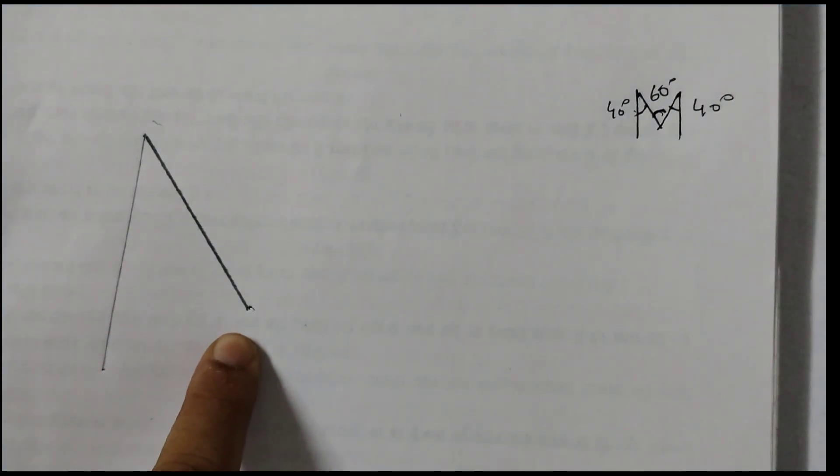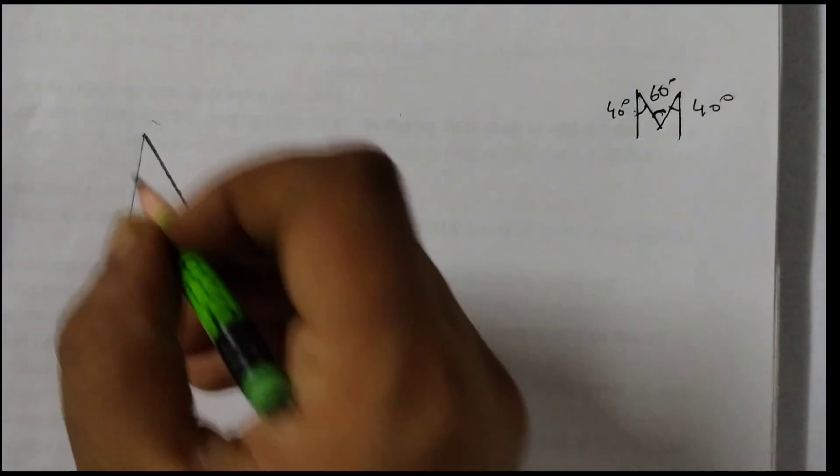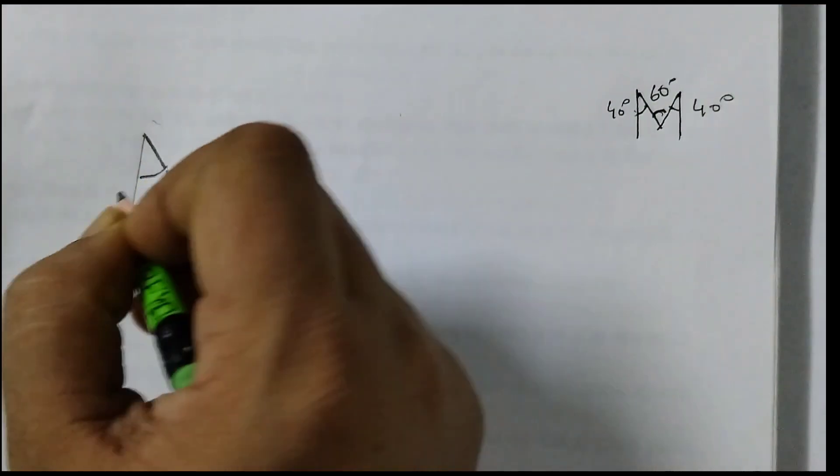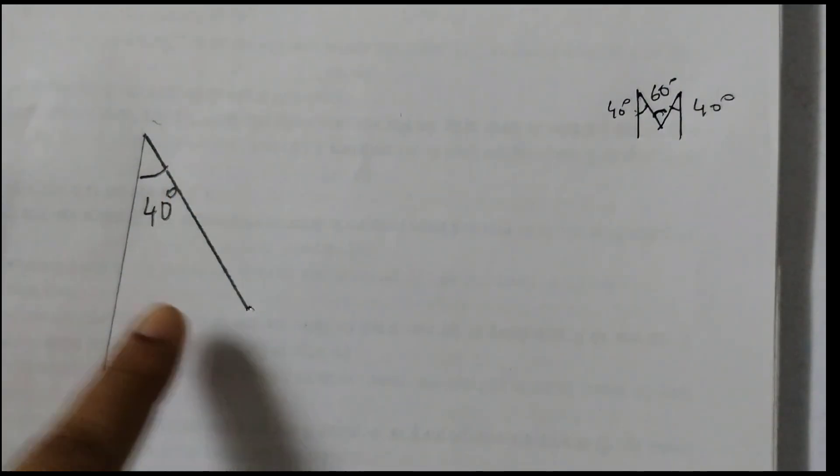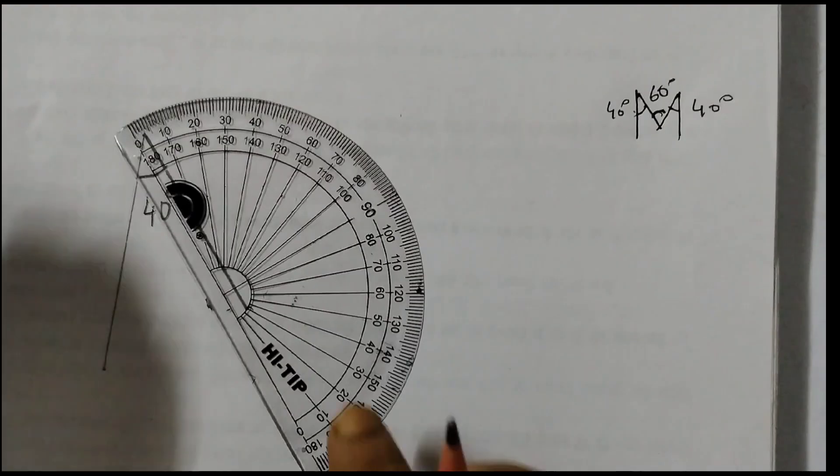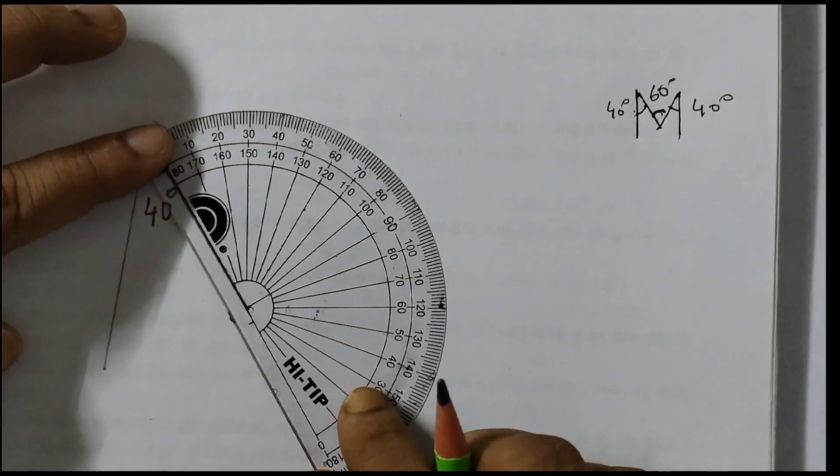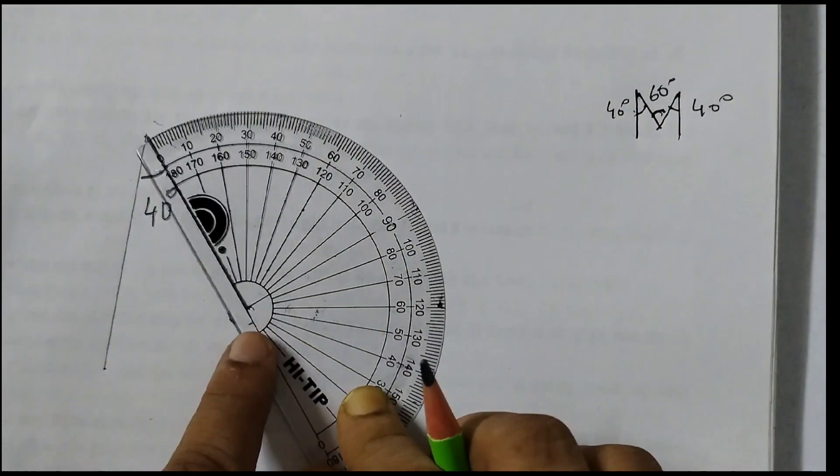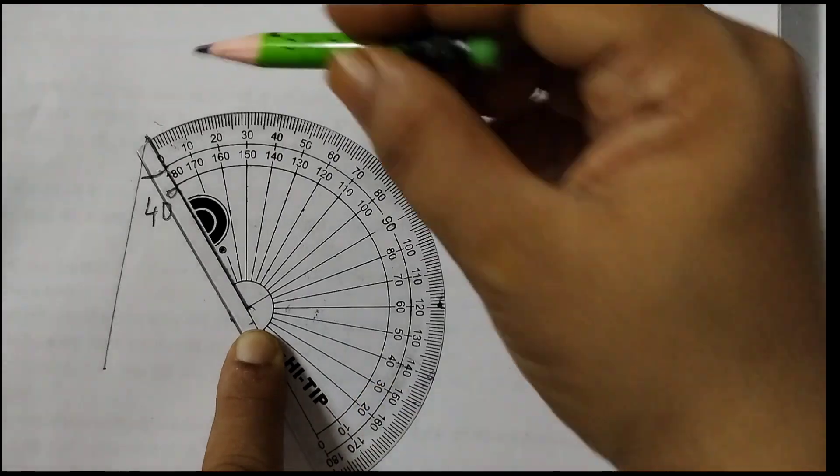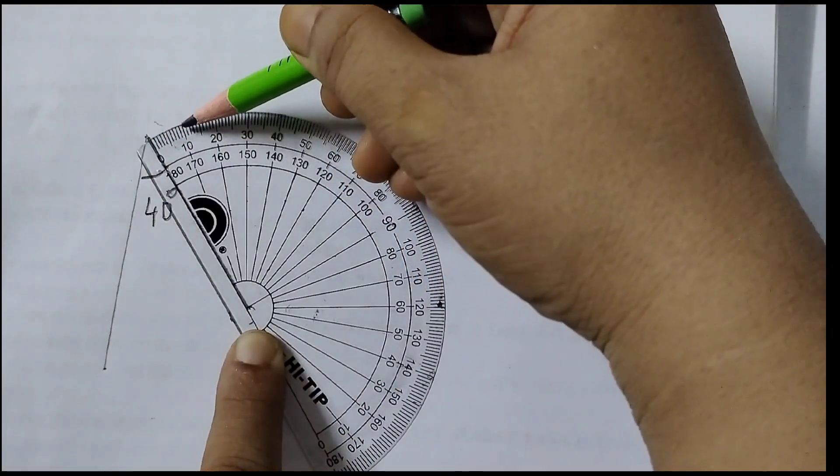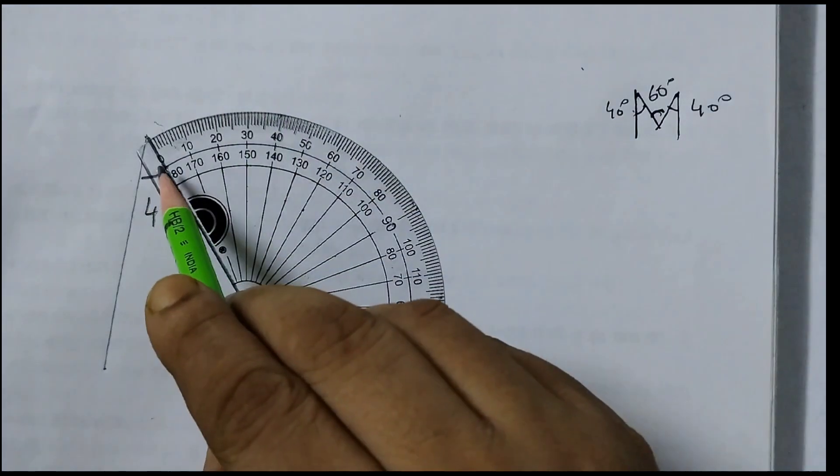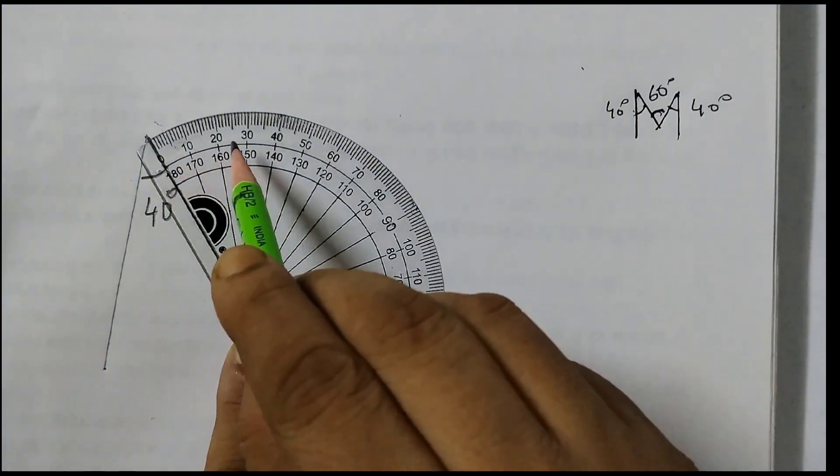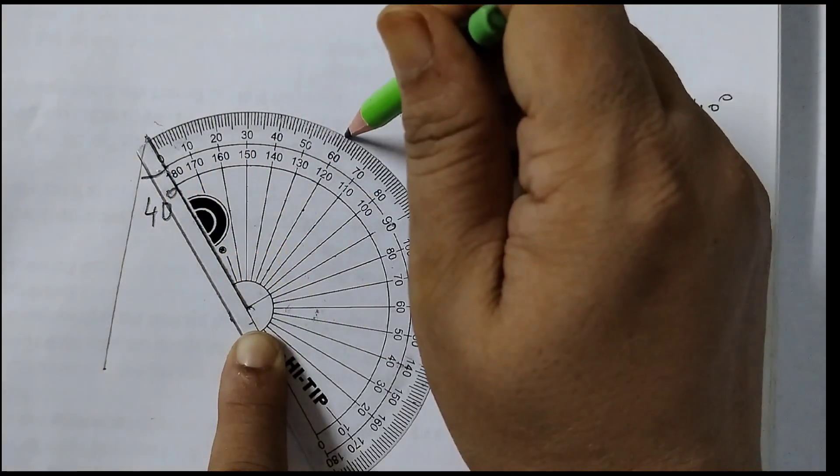Now here we need to draw 60 degrees angle, so first I'll label this as 40 degrees. Now we need a 60 degrees angle here, so take your protractor, place it like this, and then again you need to start from 0. Now when you place it like this you will see that 0 is in the outer set of the number. The outer set of number starts with 0, so we will take 0, 10, 20, 30, 40, 50, 60. 60 is here.